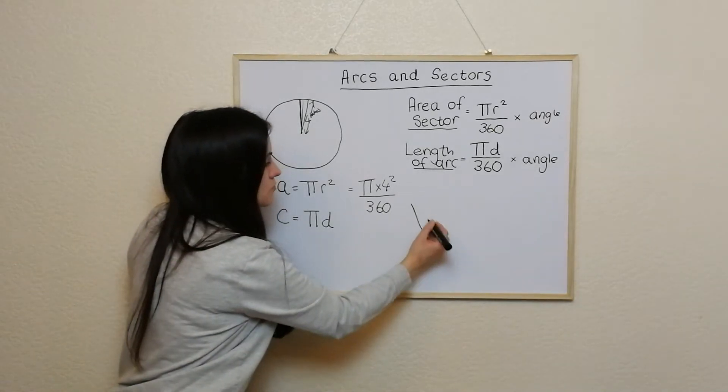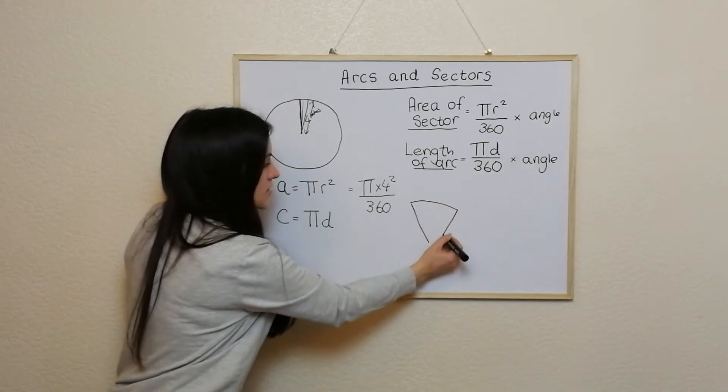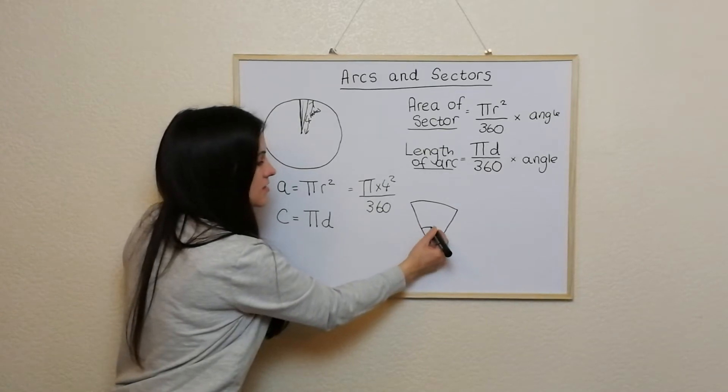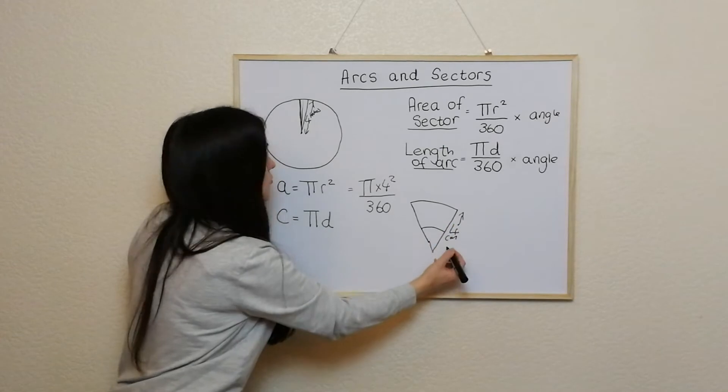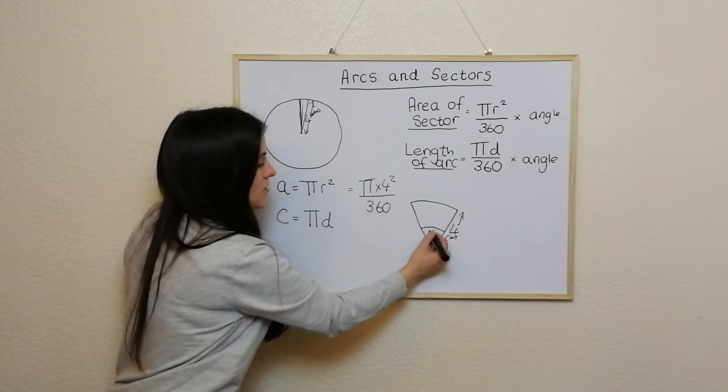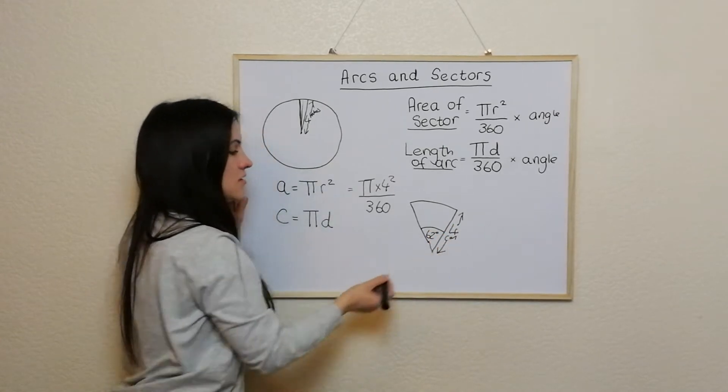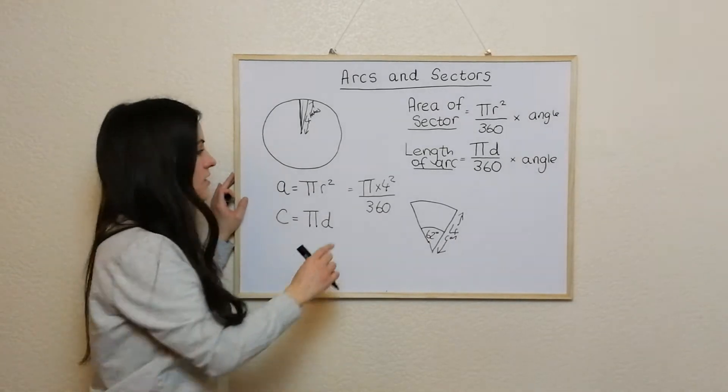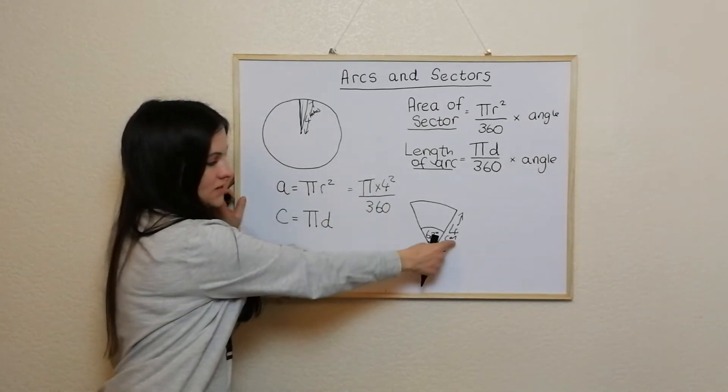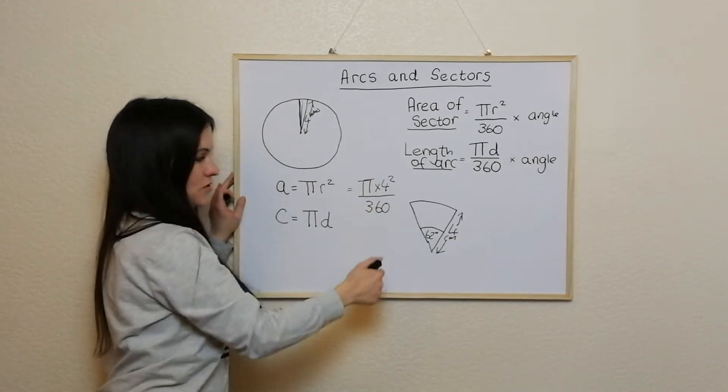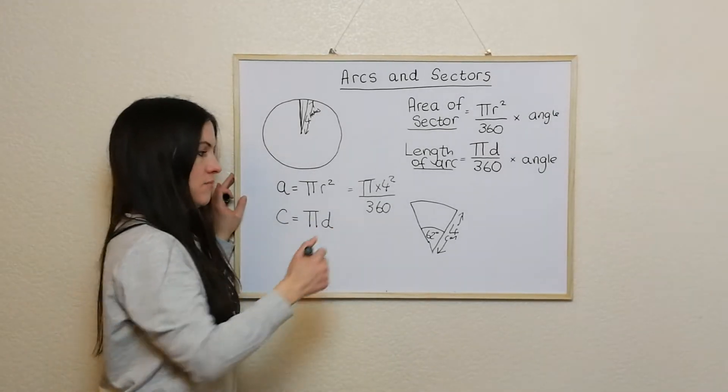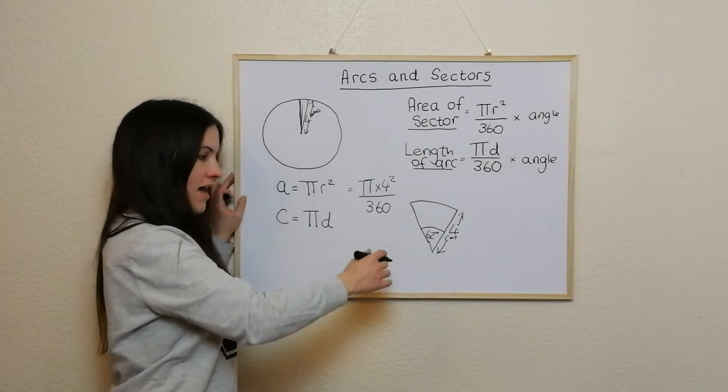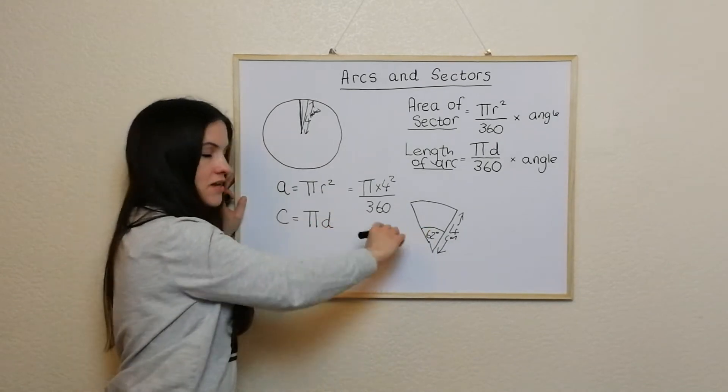So usually an arcs and sectors question has a segment like this. So it might be that it's 4 centimeters there instead of 4 inches and maybe 62 degrees here. So what you would be doing is pi r squared, so pi times 4 centimeters squared and dividing by 360 to get the one degree, but then times it by that angle and that will get you the area of that full sector.